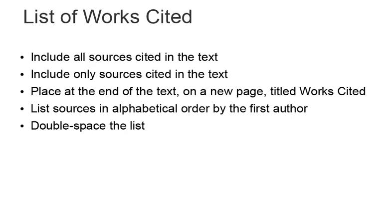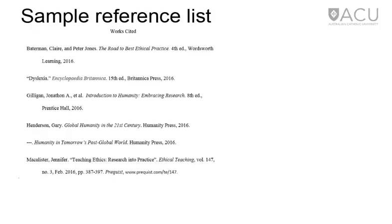For web entries, DOIs or URLs are needed. The title works cited is centred at the top of the page and double spacing is used throughout; indent all lines other than the first line. To automatically set this up in Word, highlight the text you want to have a hanging indent, then click the tiny arrow in the bottom corner of the paragraph dialog box in the toolbar, and under special select hanging.